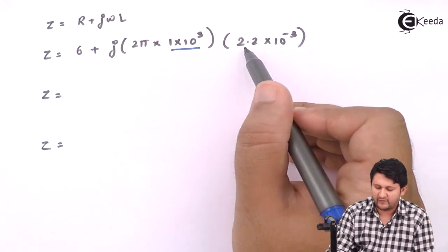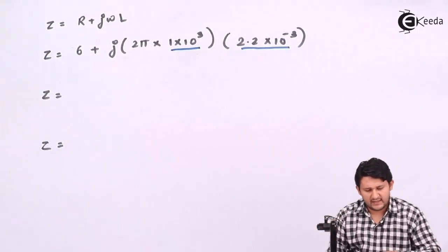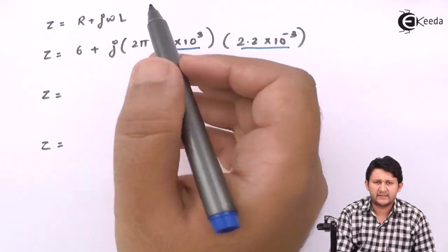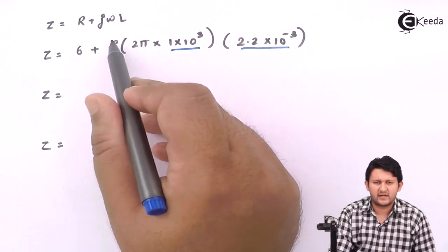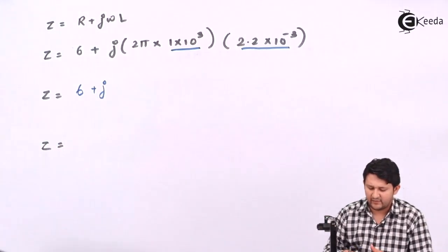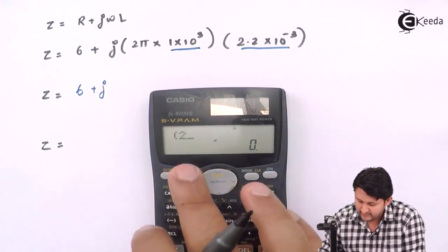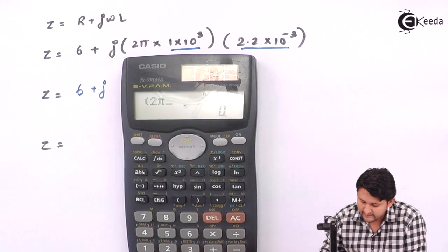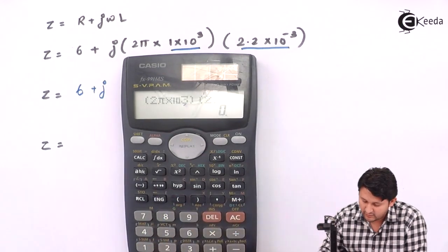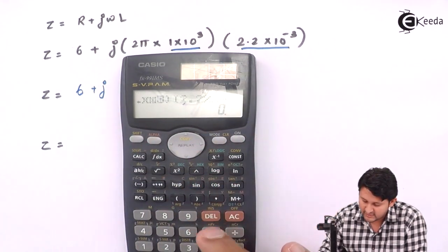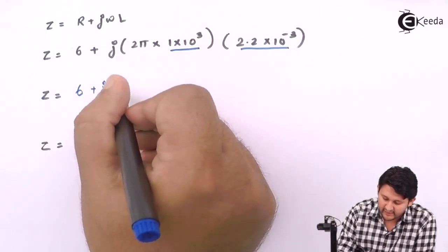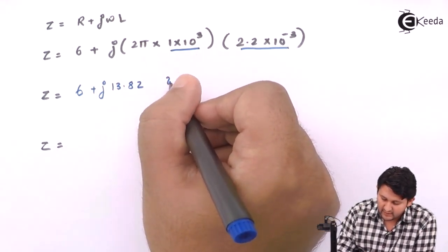Simplify the imaginary part in your calculator: 2π × 10³ × 2.2×10⁻³. The imaginary value you get is 13.82. So the rectangular form is Z = 6 + j13.82.